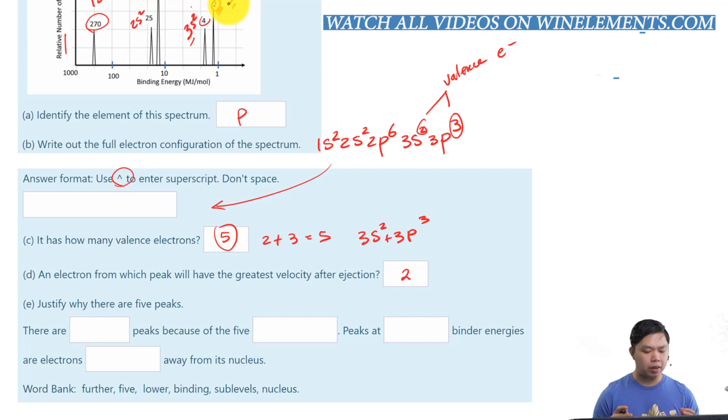And, justify why there are 5 peaks. Let's look at this. Well, there are 5 of them. 5 peaks. And, we have the word bank right there. Because of the 5 sublevels. 1, 2, 3, 4, 5. So, in this case, we can look at it in terms of sublevels. Peak at lower binding energy. So, it should be binding energy or electron further away from the nucleus. Peak at lower binding energy, which is right here at 2. It will be further away from the nucleus or its nucleus.